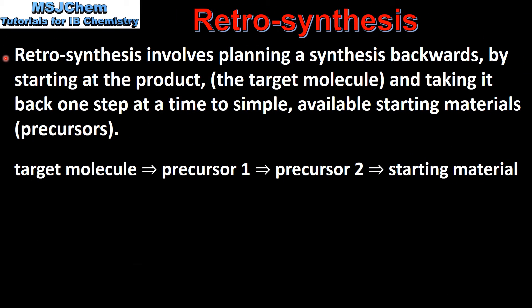As we saw from the previous example, retrosynthesis involves planning a synthesis backwards by starting at the product, which is called a target molecule, and taking it back one step at a time to simple available starting materials, which are called precursors.